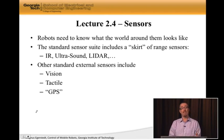Now, there are other standard external sensors, of course. Like vision, or tactile sensors. We have bumpers or other ways of physically interacting with the world. Or GPS, or I'm putting them within quotation because there are other ways of faking GPS. For instance, in my lab, I'm using a motion capture system to pretend that I have GPS.